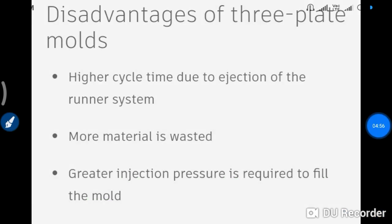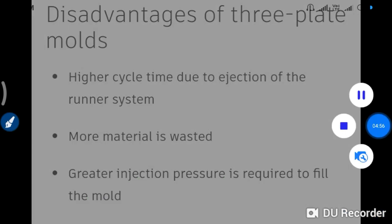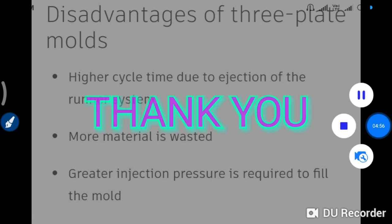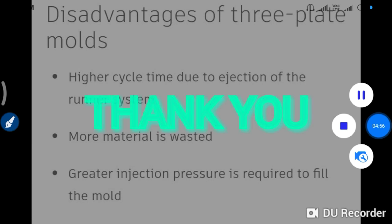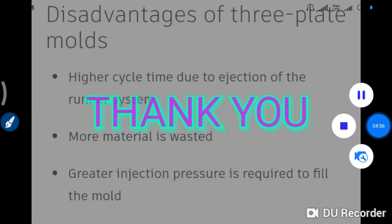Disadvantages of the three-plate mold include that more material is wasted, and greater injection pressure is required to fill the mold compared to the two-plate mold.